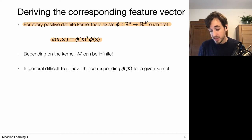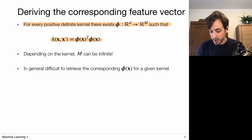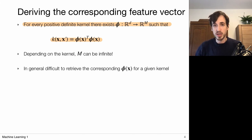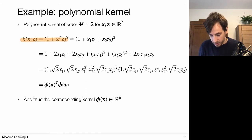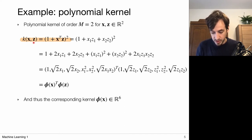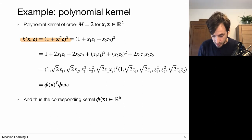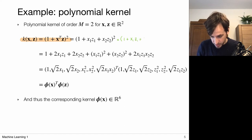In general it is difficult to obtain the basis functions explicitly, but that is not a problem — once we have a valid kernel we do not necessarily have to retrieve the corresponding basis function. Here is an example where we can actually derive the corresponding basis function. Let's define a kernel as k(x, z) = (1 + x^T z)², which is a valid polynomial kernel. We can show this by first expanding the scalar product and then expanding the square.